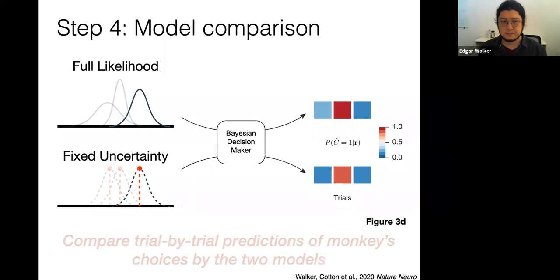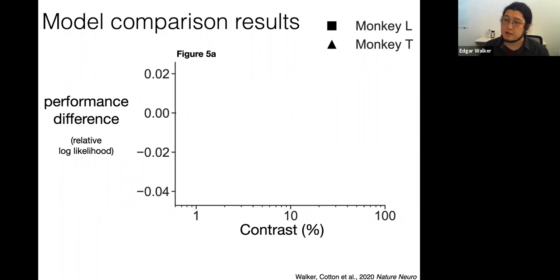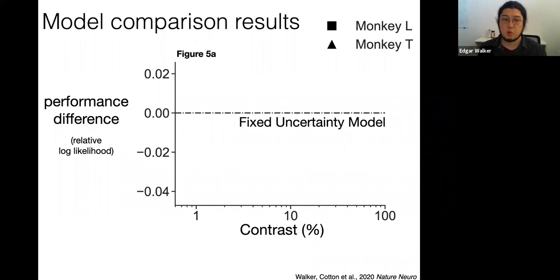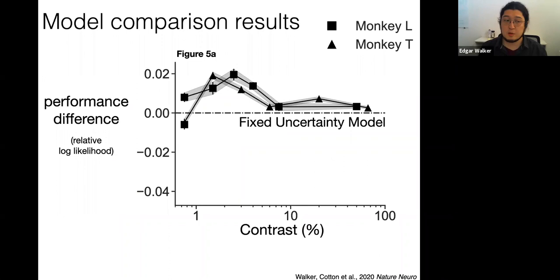The main results show that across both monkeys and a wide range of contrast values, the full likelihood model successfully yields better trial-by-trial predictions of the monkey's decisions compared to the fixed uncertainty model. This suggests that trial-by-trial fluctuations in the shape of the likelihood function, as carried by the full likelihood model, are indeed informative about the monkey's trial-by-trial decisions, as predicted by the theory of probabilistic population code.